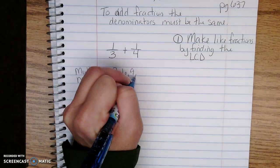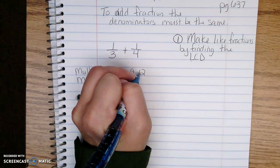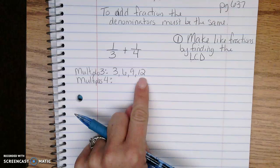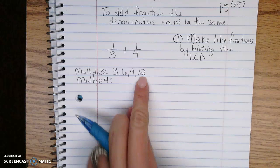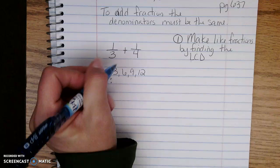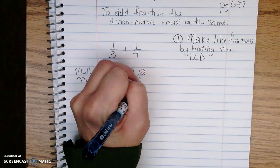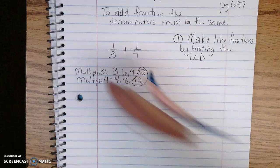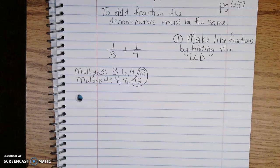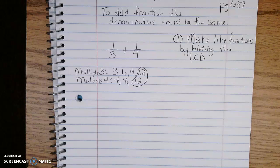The multiples of 3 are 3, 6, 9, 12. My multiples of 4 are 4, 8, 12. The first one they have in common is 12, so that tells me I need to change my denominators to be 12.